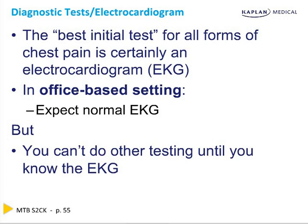You can't do the other tests without the EKG. You don't know whether to do a regular stress test or stress thallium. You don't know whether there's a left bundle branch block that makes a stress test unreadable. What if the EKG showed Q waves from an old MI? Then you already know there's coronary disease. You must do the EKG first, even when you don't think there is real ischemic pain.